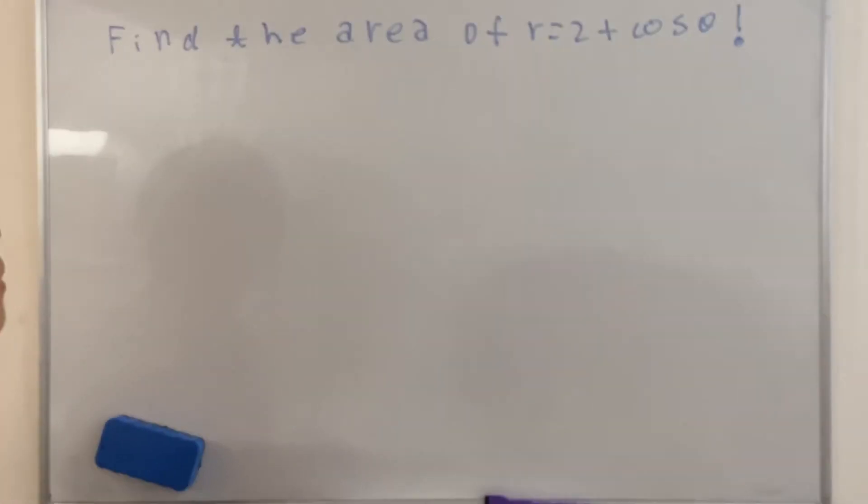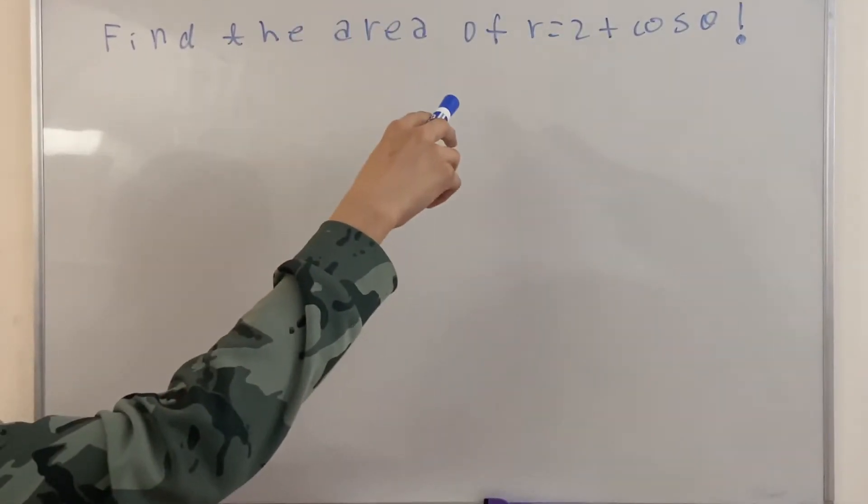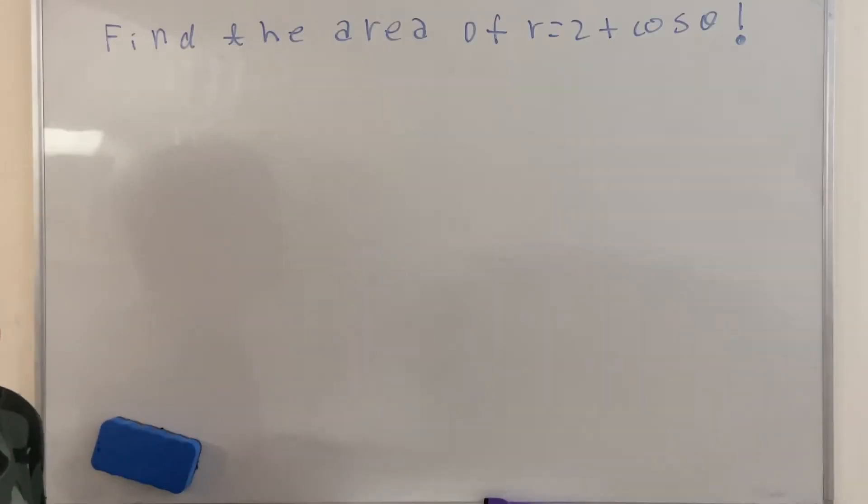Hello everyone! Let's find the area of r equals 2 plus cosine theta.